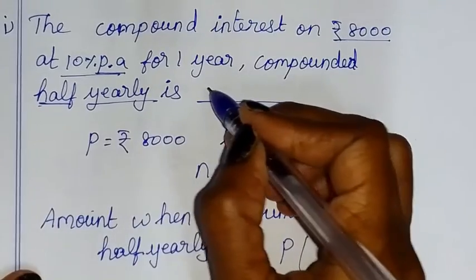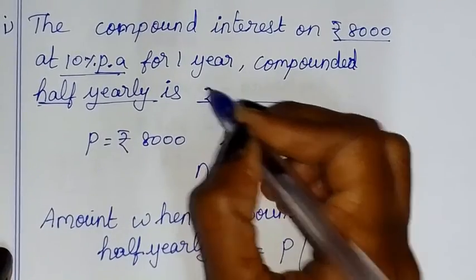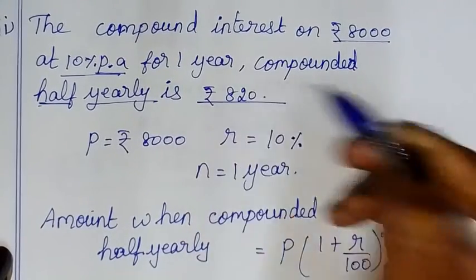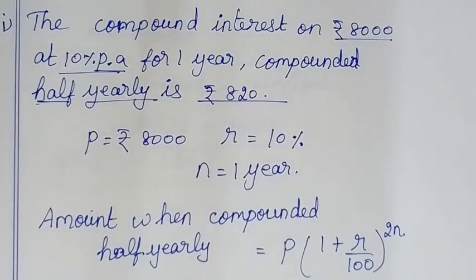So the compound interest compounded half-yearly is equal to Rs.820. Thanks for watching, children.